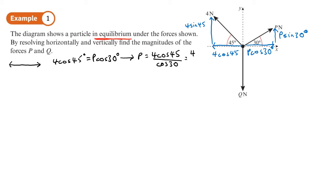So 4 root 6 over 3, and decimalised, that's 3.26. Okay, so we've basically found P. If I now want to find Q, let me resolve or look at the forces in a vertical direction.